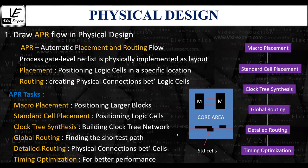The last stage in the APR flow is timing optimization. Timing optimization in physical design aims to achieve better performance by carefully placing all cells inside the core area, managing congestion, and meeting timing constraints. It is a critical step in creating efficient and reliable integrated circuits. This covers all the stages involved in the automatic placement and routing flow.